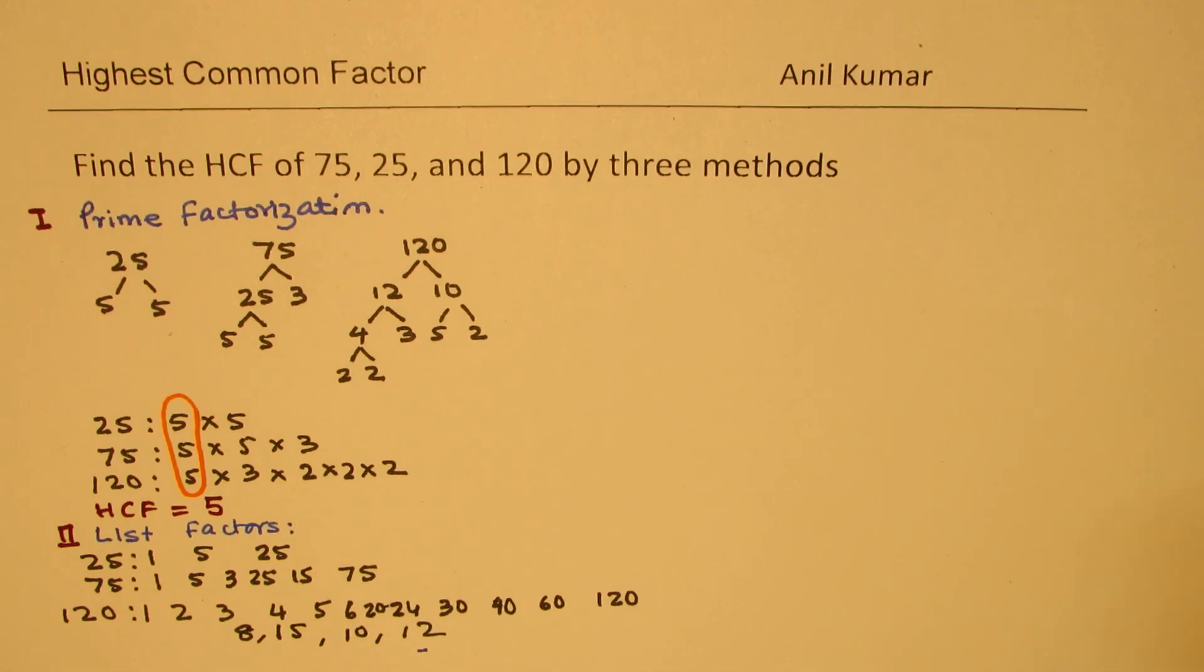Now, if you compare which are common in all of them, then the only answer which you get is 5. So, after listing all the factors, you can clearly see your solution.